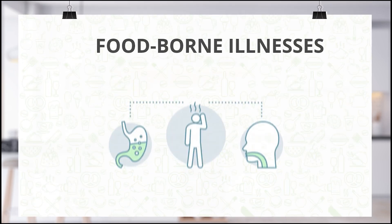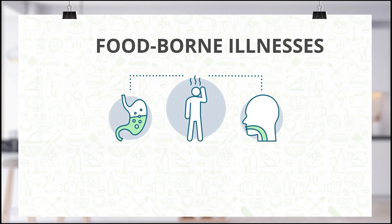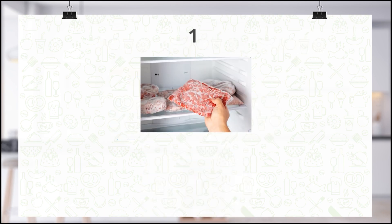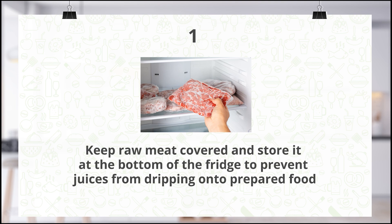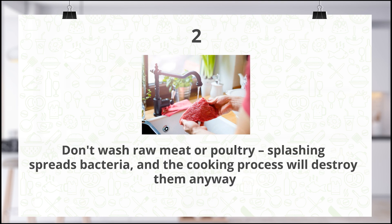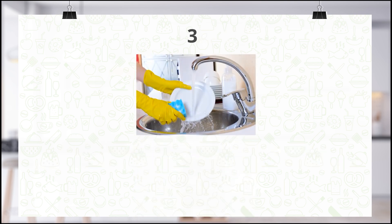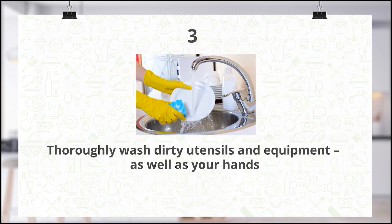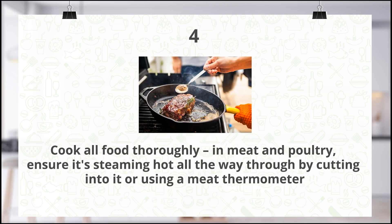Bacteria that cause foodborne illnesses can be kept to an absolute minimum by following four simple procedures: first, keep raw meat covered and store it at the bottom of the fridge to prevent juices from dripping onto prepared food; second, don't wash raw meat or poultry as splashing spreads bacteria and the cooking process will destroy them anyway; third, thoroughly wash dirty utensils, equipment, and your hands; fourth, cook all food thoroughly — in meat and poultry, ensure it's steaming hot all the way through by cutting into it or using a meat thermometer.